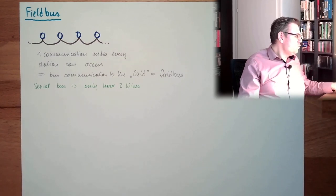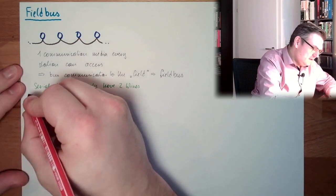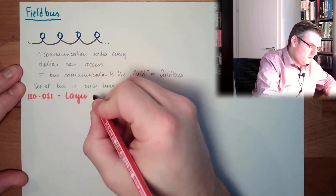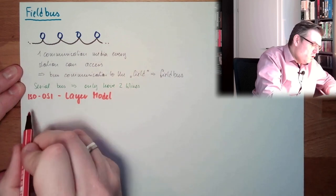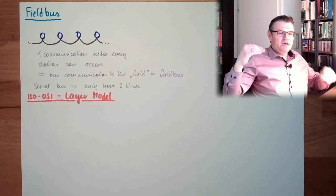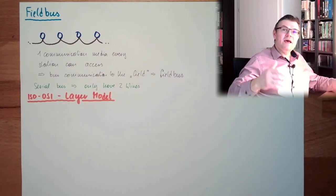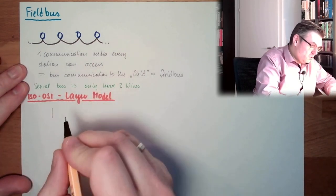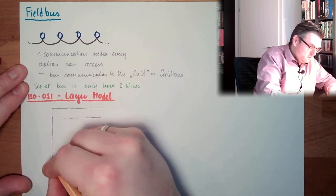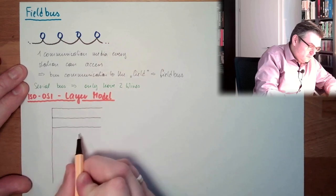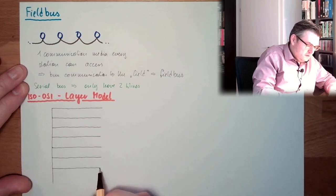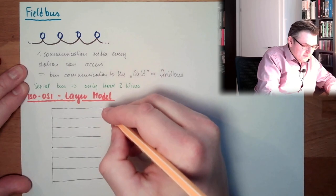There was the ISO-OSI layer model developed. This separated the communication into different layers. They said we have different layers, and they identified seven of these layers. So there's one, two, three, four, five, six, seven. These are the seven layers.